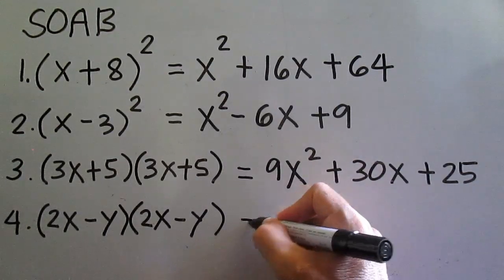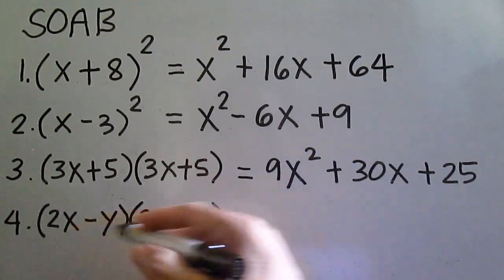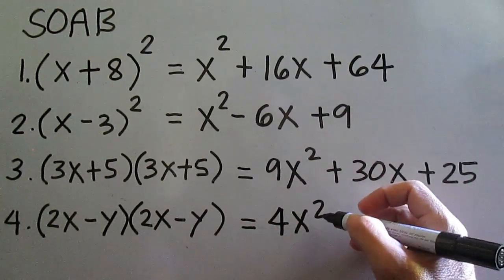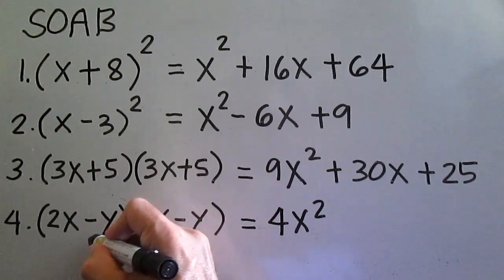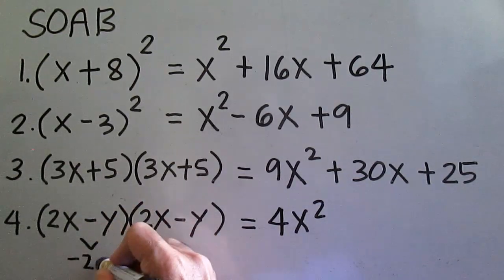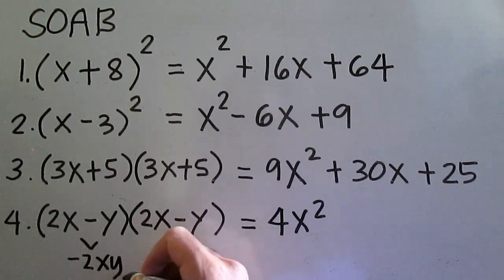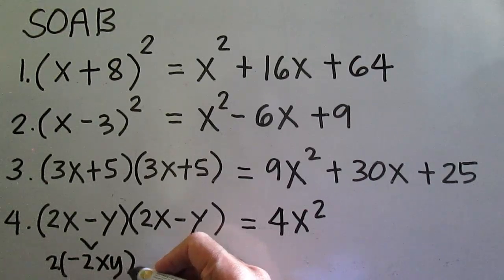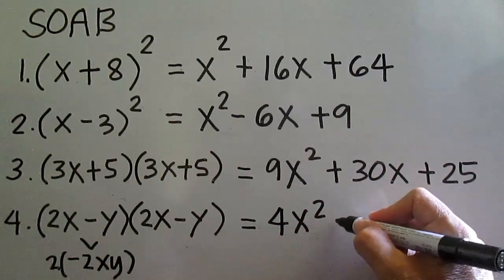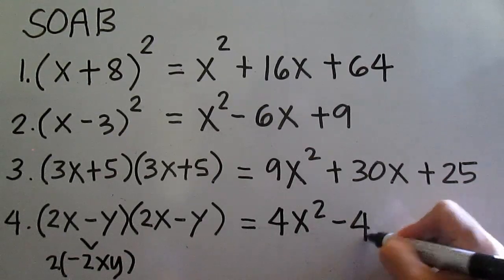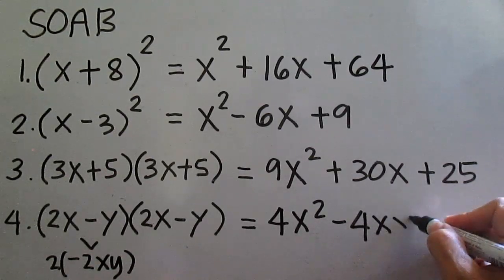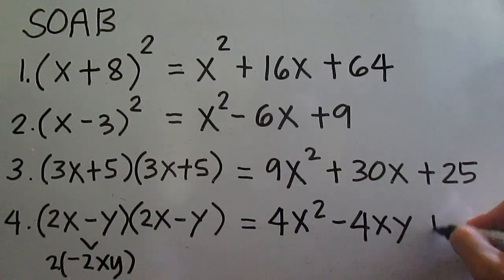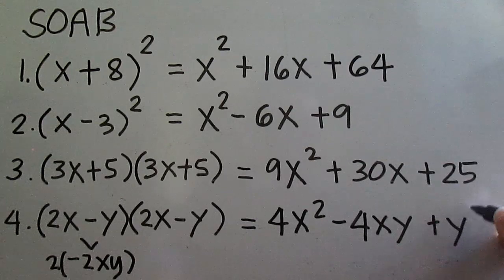The square of the first term is 2x times 2x is 4x squared. 2x times negative y is negative 2xy, times 2 is negative 4xy; since we are following a term, write minus 4xy. Then the square of the second term: negative y times negative y is y squared.